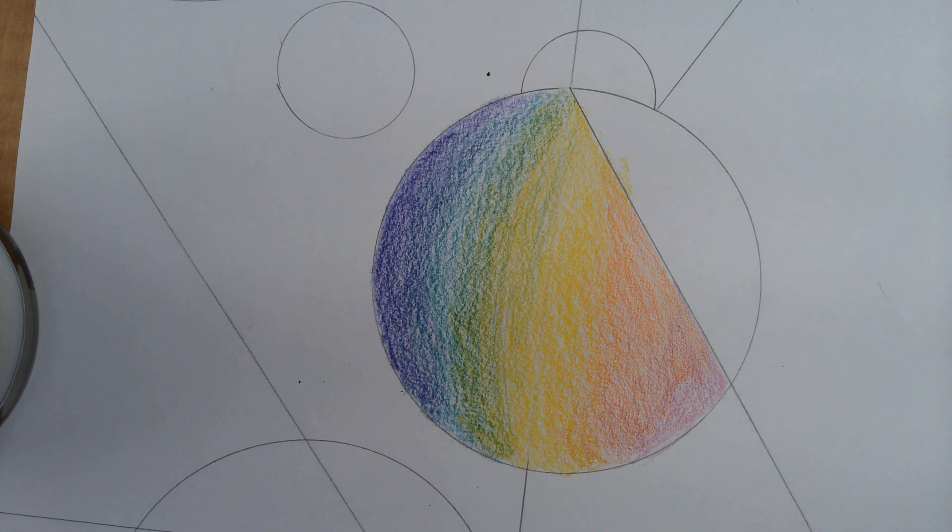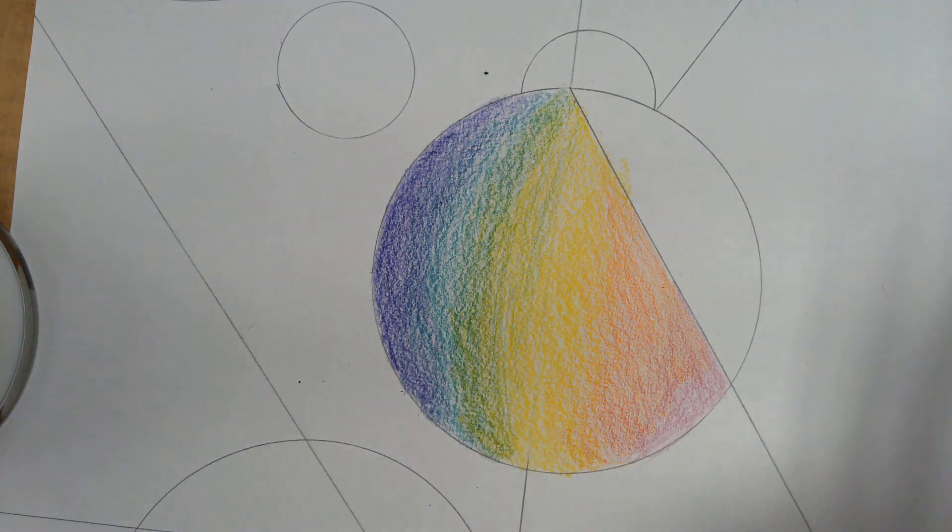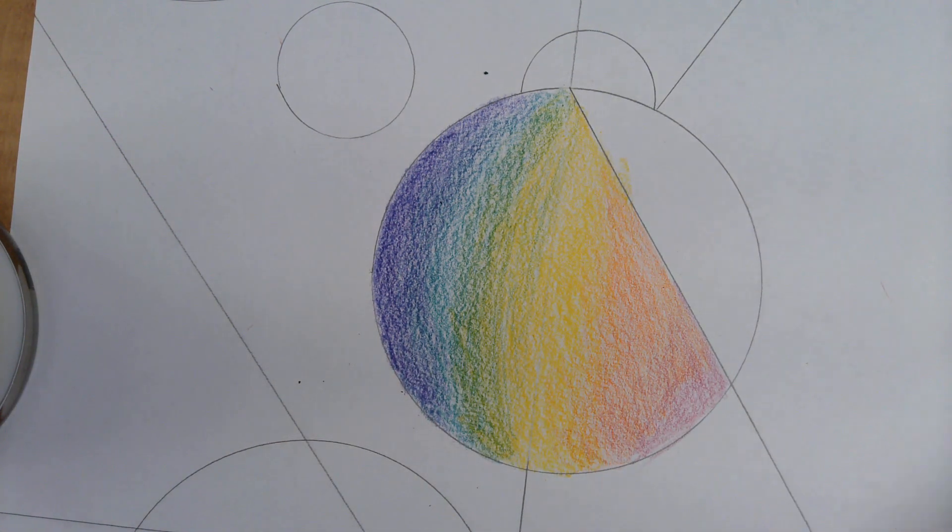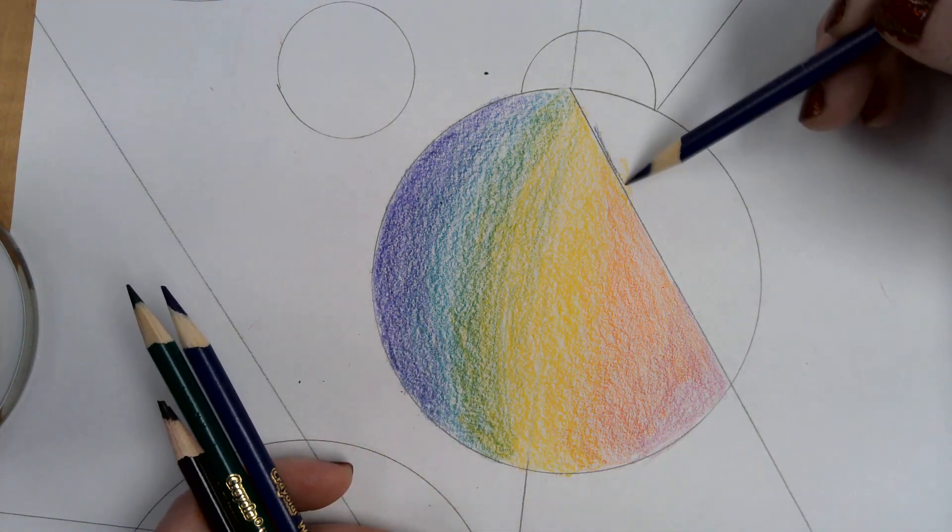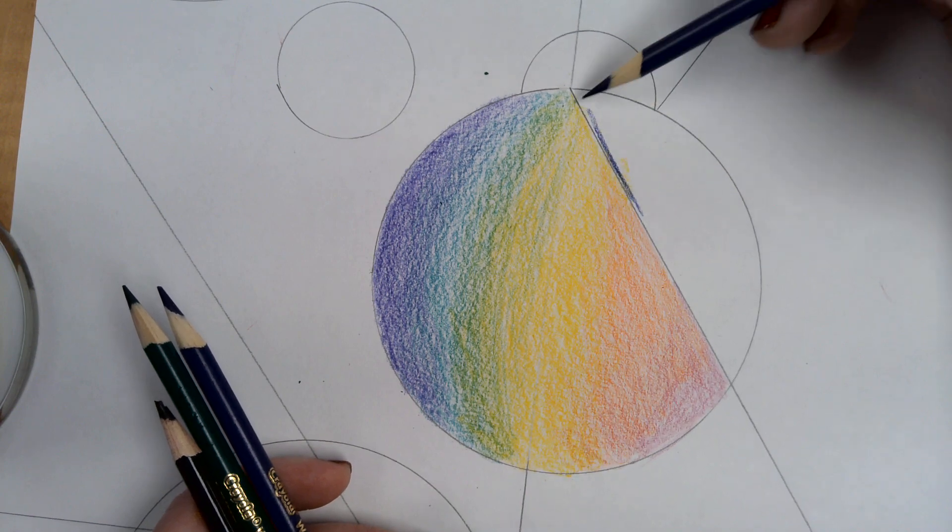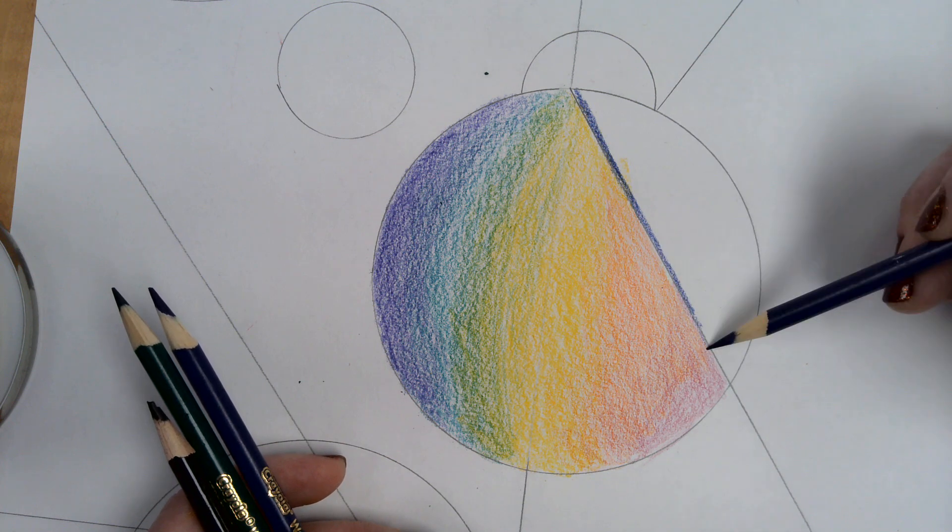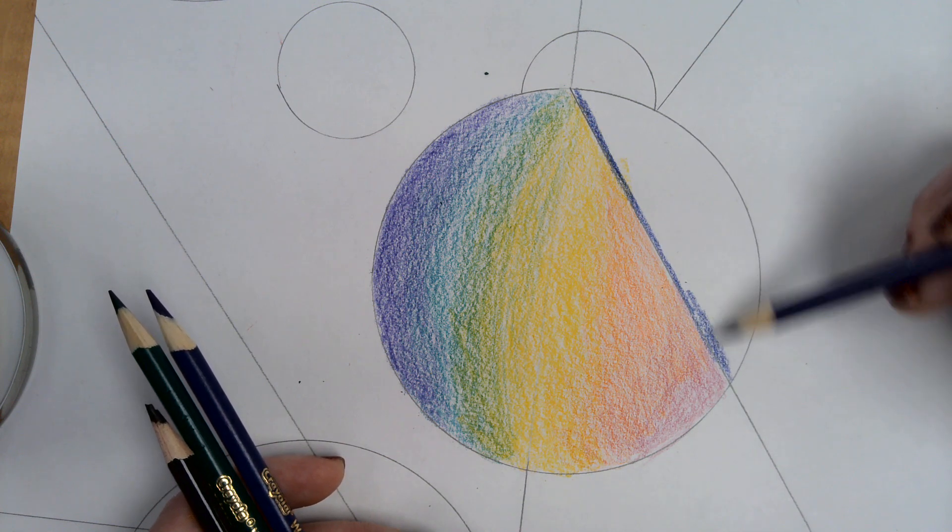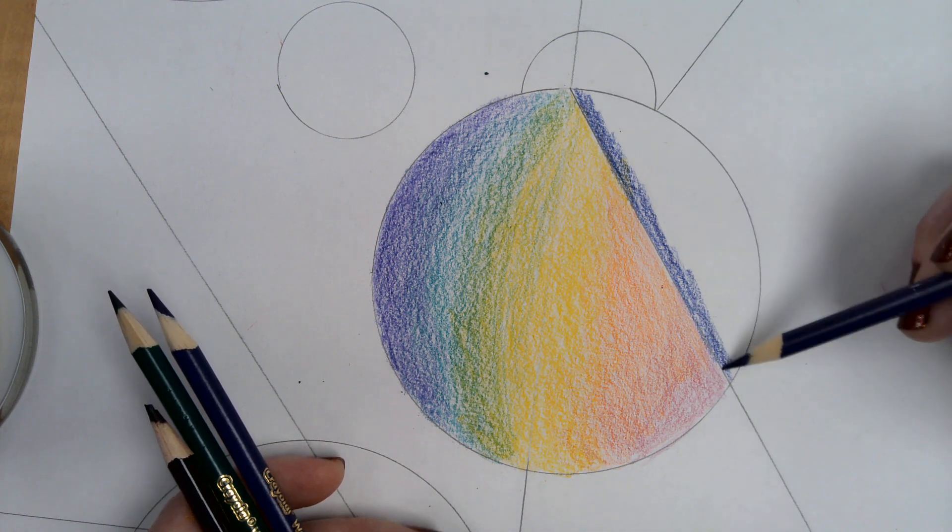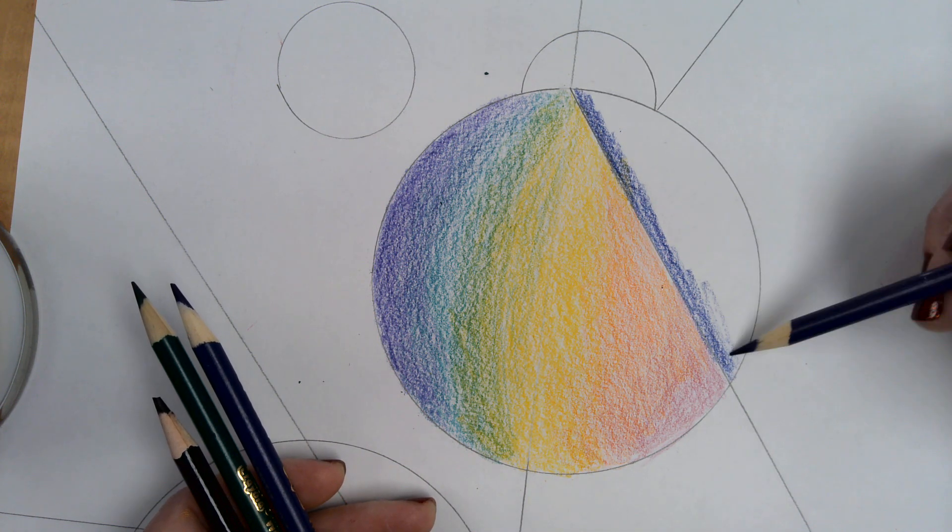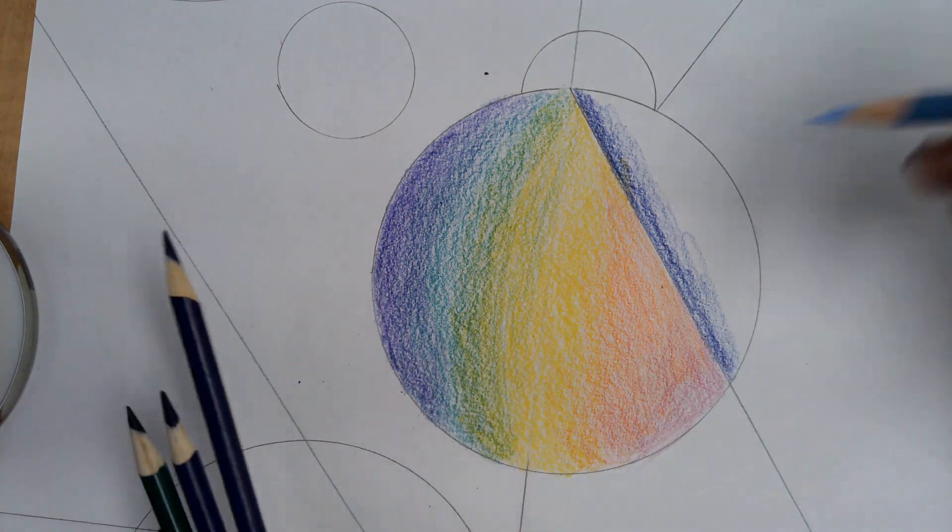Then what I'm going to do is change this up. So I'm only going to use cool colors to change it up. So I'm going to start with a dark blue. So it's the same shape but it's cut with a geometric line here. And I'm going to transition this from blue to a light blue.